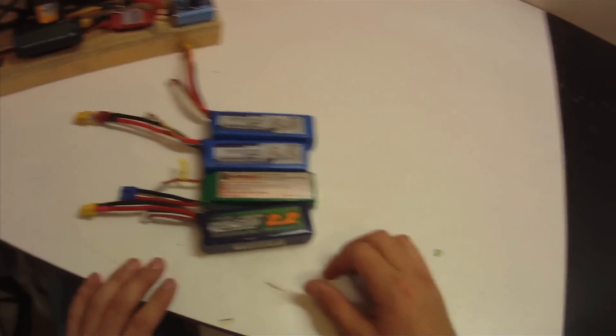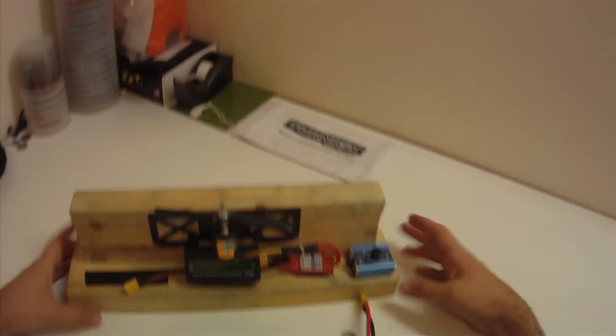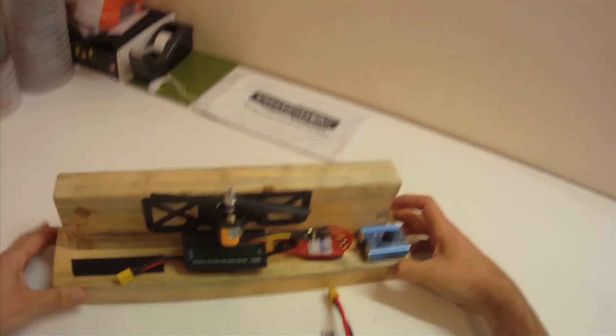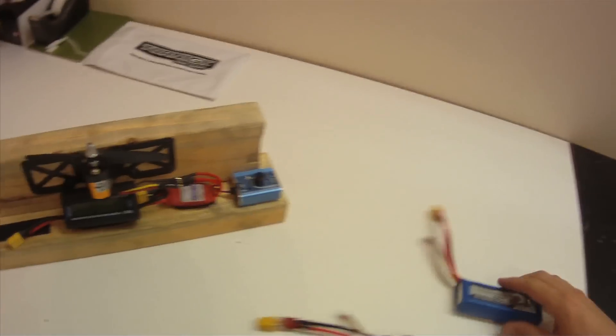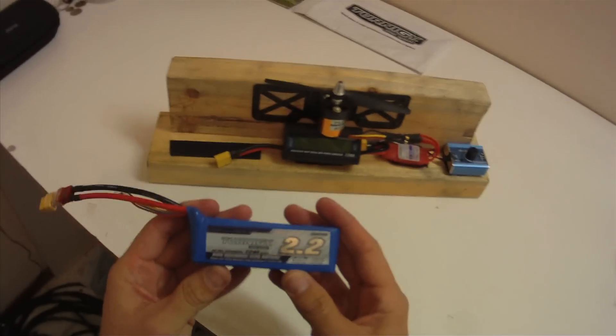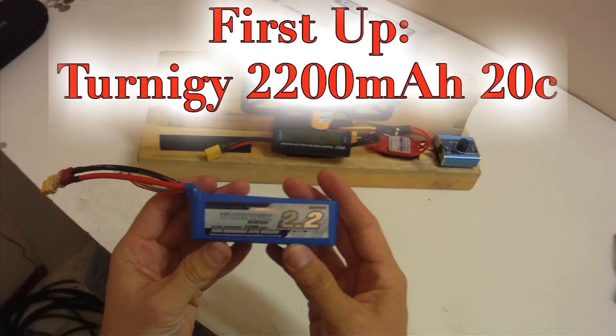So what I'm doing here is I'm testing out some batteries, some Turnigy batteries, a Park Zone battery. I got a little power set up here with a watt meter, a little speed control servo tester to control my throttle, and an in-runner motor with a 6x4, kind of a setup that a lot of people with like EasyStars and such use.